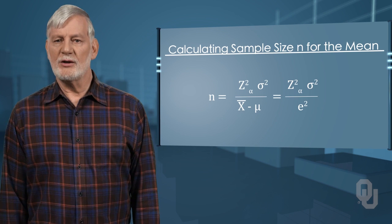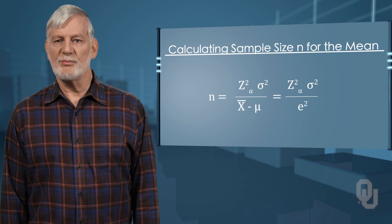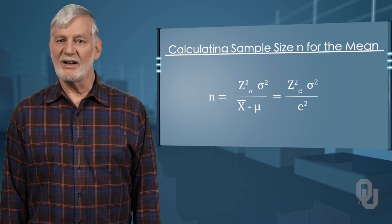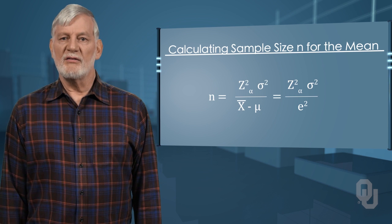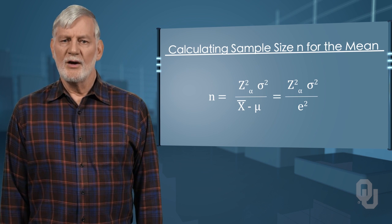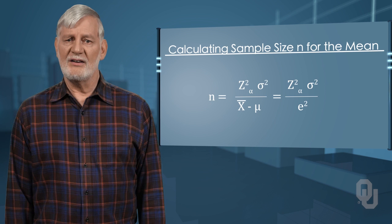If we set a predetermined acceptable error for the difference between x bar and mu, called e in the formula, we are much further along in solving the sample size. We still do not know the population standard deviation sigma.